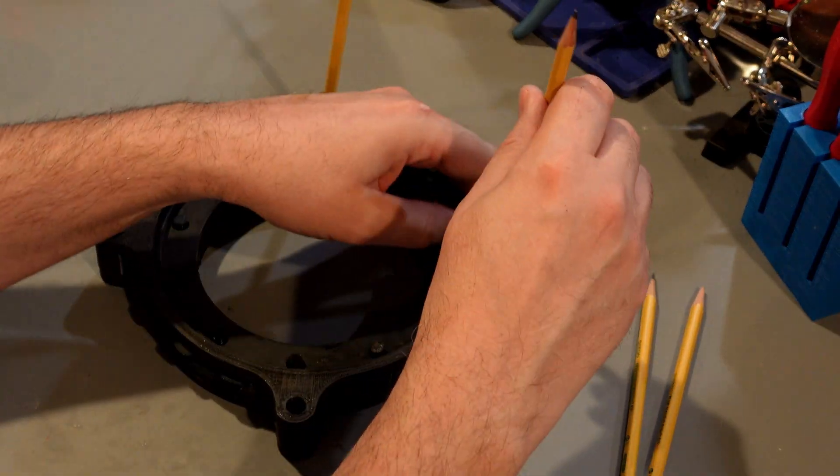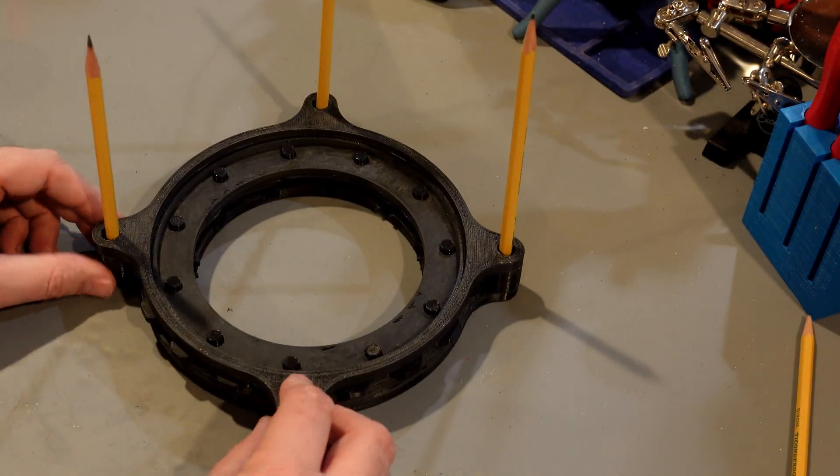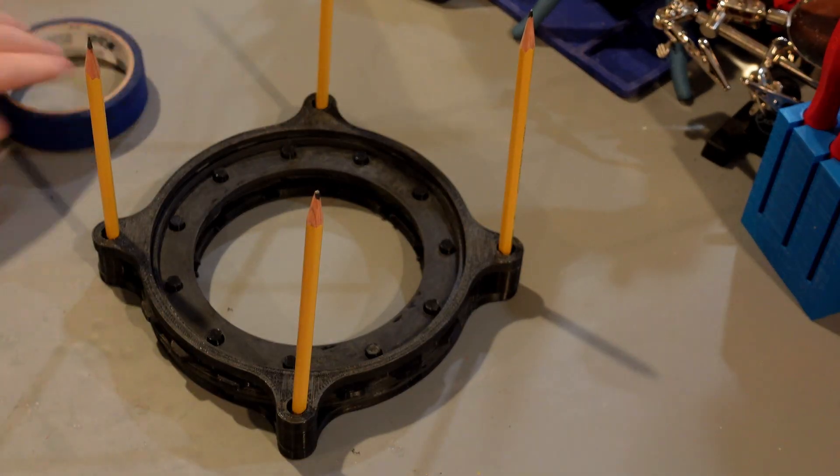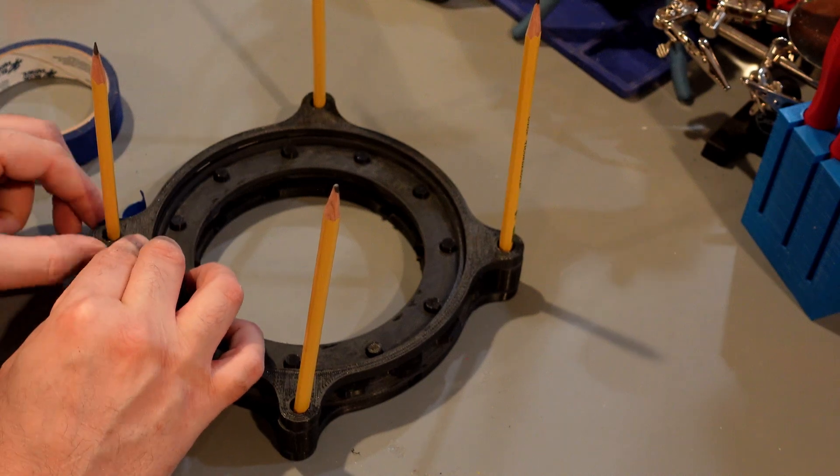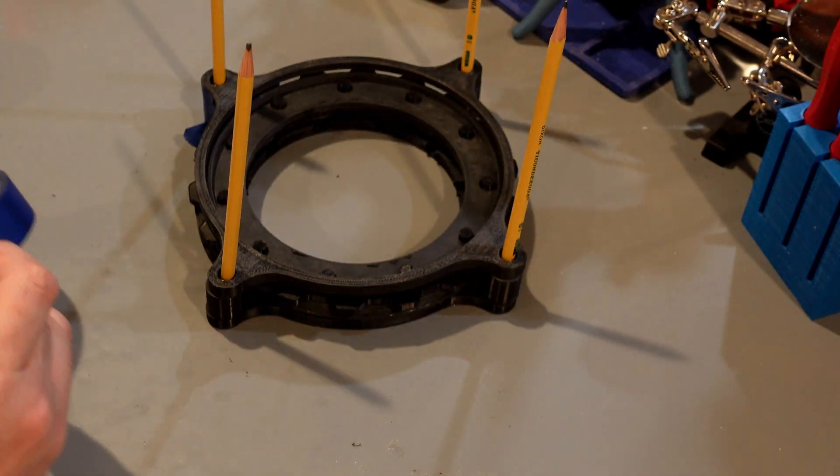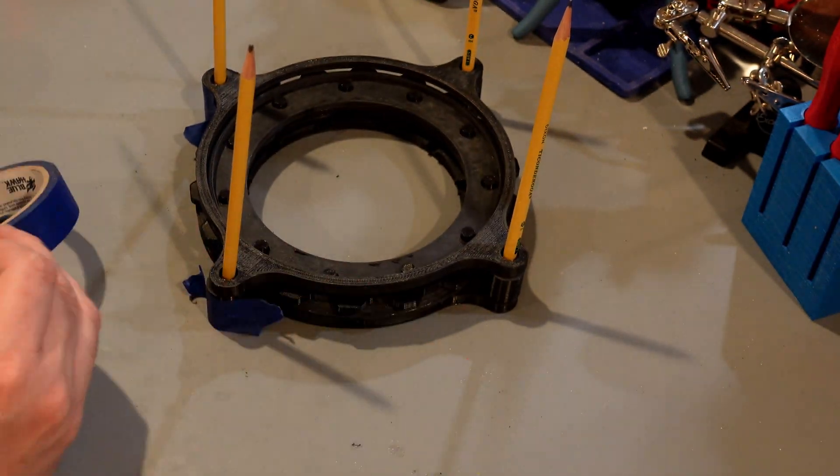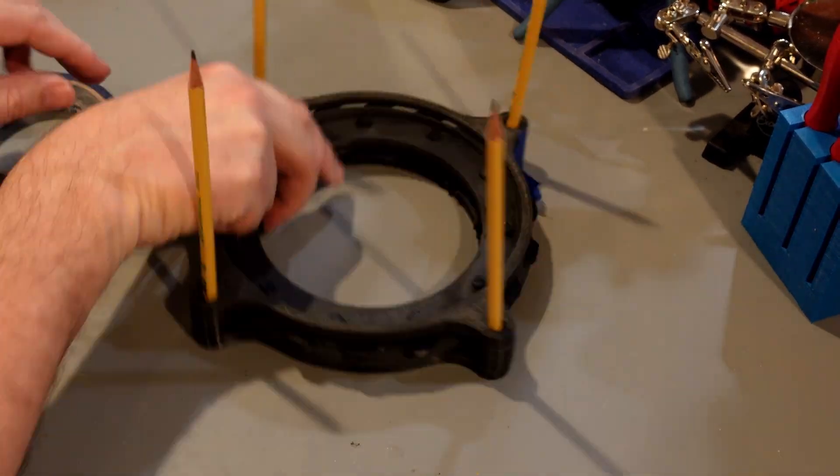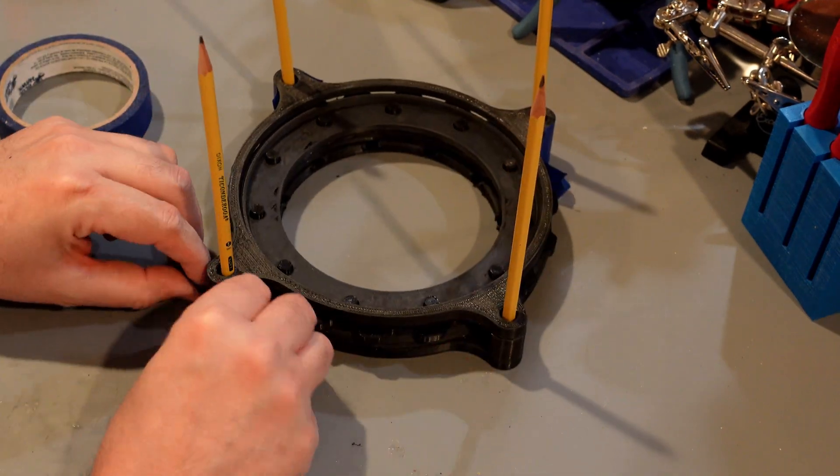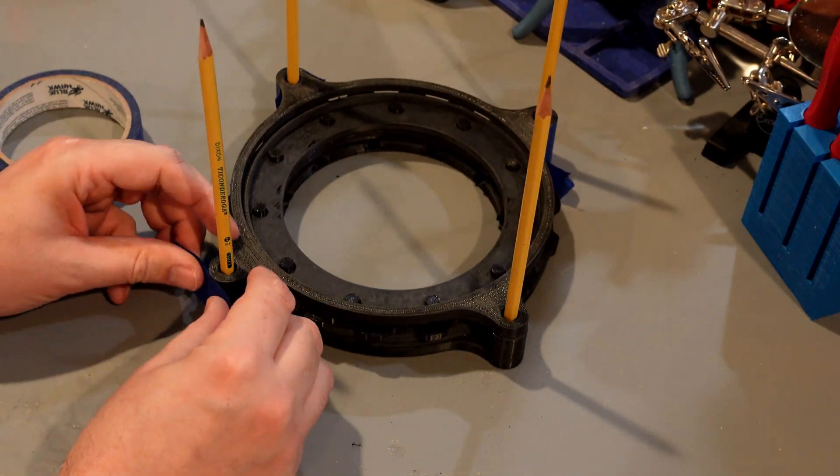Again, you can use nuts and bolts to attach this thing. I didn't have any that were the size that I needed, so I just put some pencils in here that keeps everything aligned. Then using tape, get the alignment of all three pieces as close as possible, so the top spacer and bottom. I want those very close if I can get them.